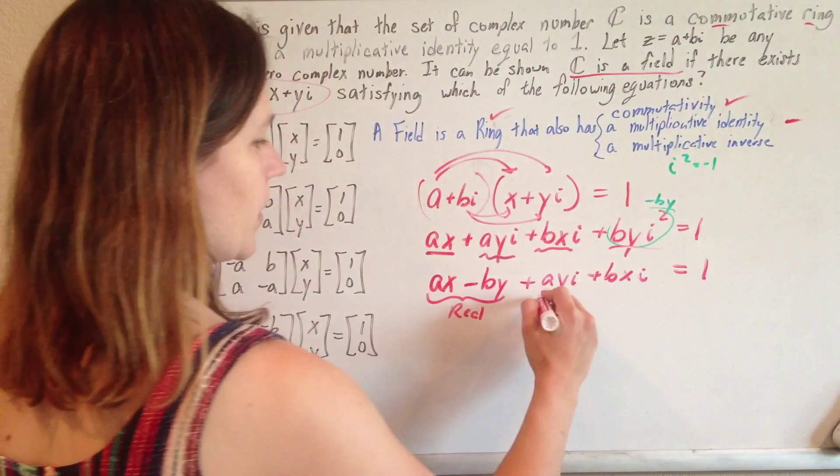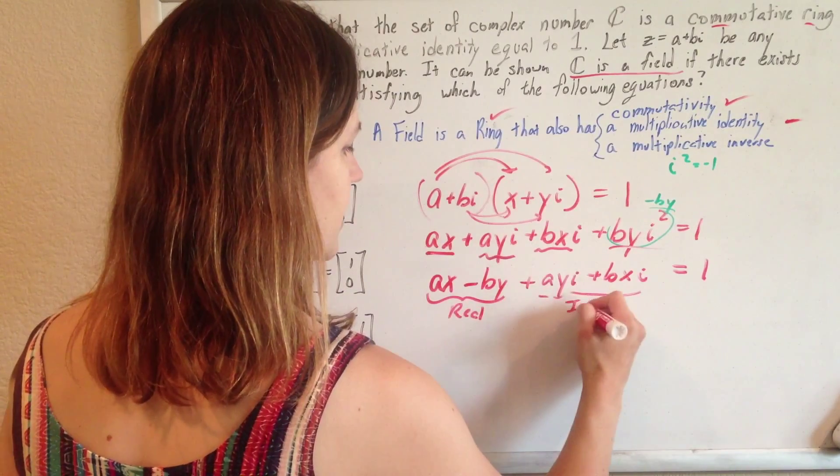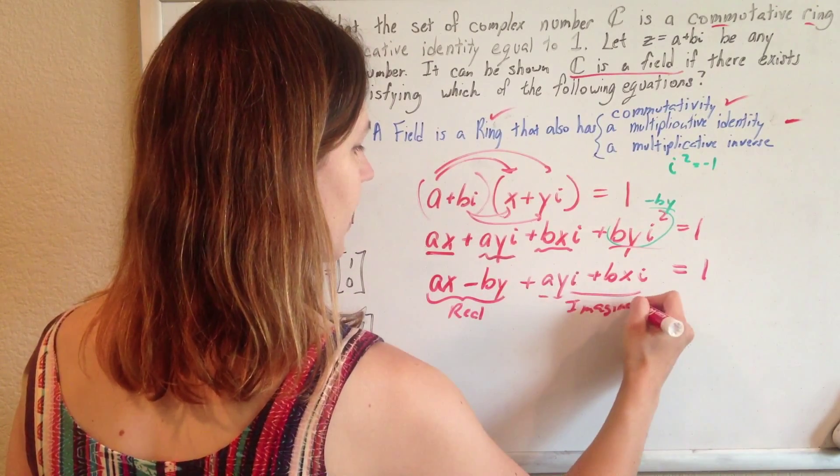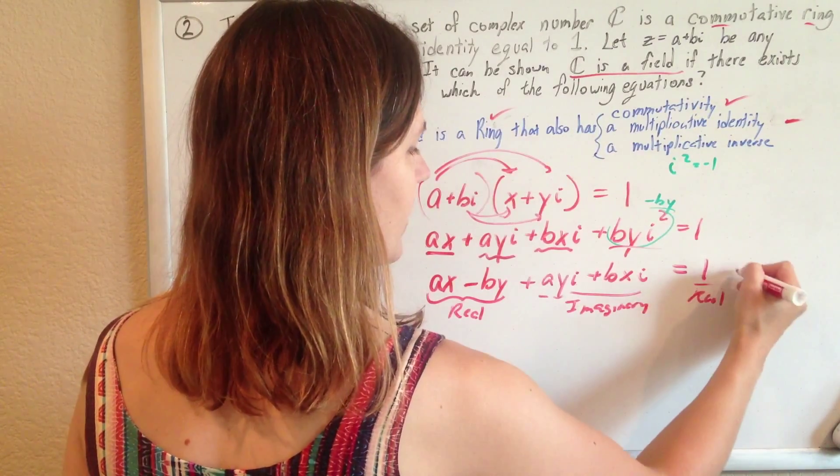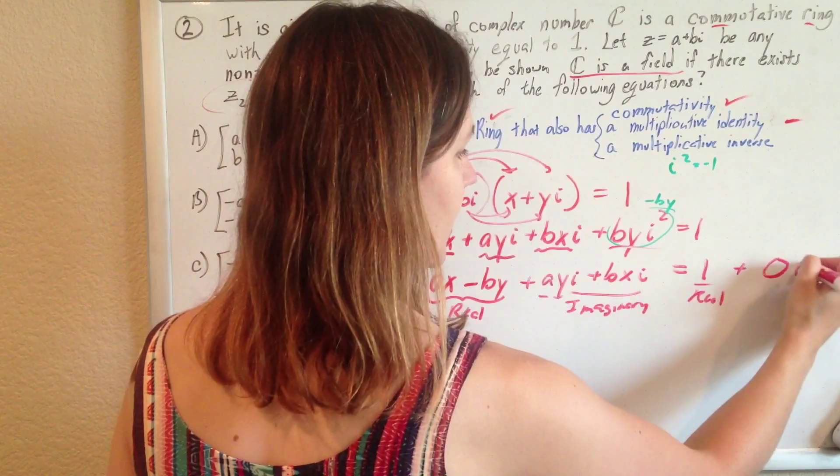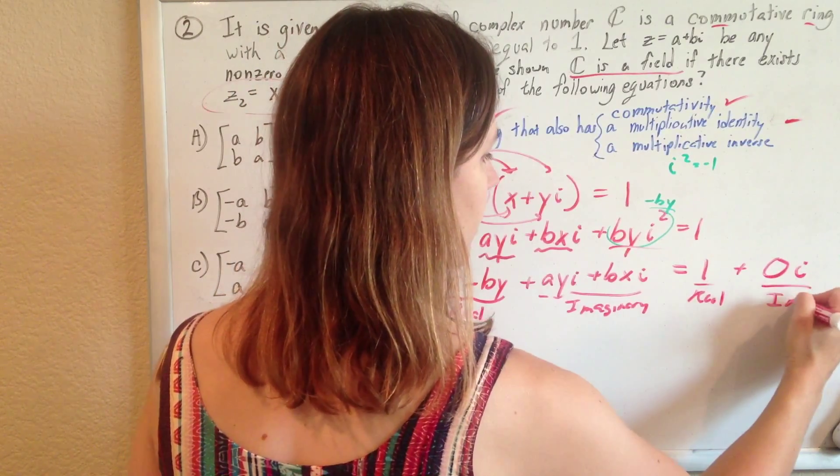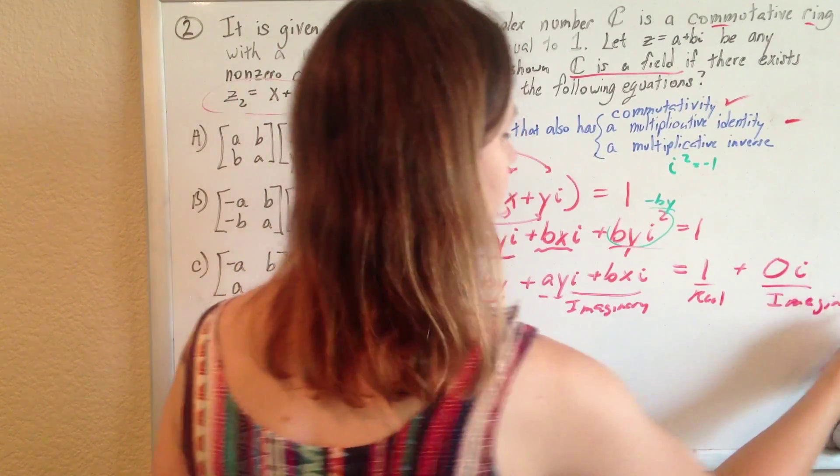And that should still equal 1. So we've got the real part and the imaginary part on this side should equal the real part, and then there's no imaginary part, but we can write it as 0i, right? The imaginary part on that side.